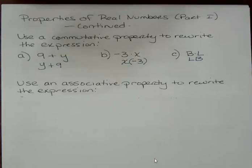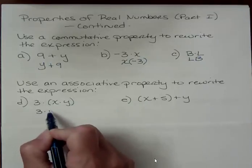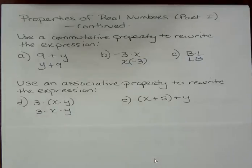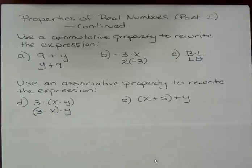Okay, associative property. Use the associative property to rewrite the expression, and then they gave us these. Now remember, when you use the associative property, you're not changing the order. I'm still going to have 3, I'm still going to have x, I'm still going to have y, but I'm going to change the grouping. And so here, x and y were grouped together. In the second half, then, I'm going to group x with 3. I changed the grouping. I left all the multiplication because I'm not changing the signs or anything. I'm just changing those grouping symbols.